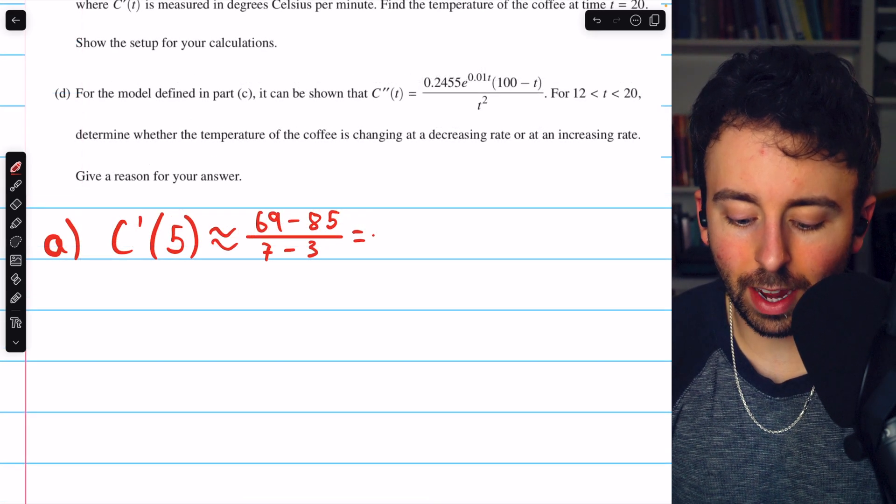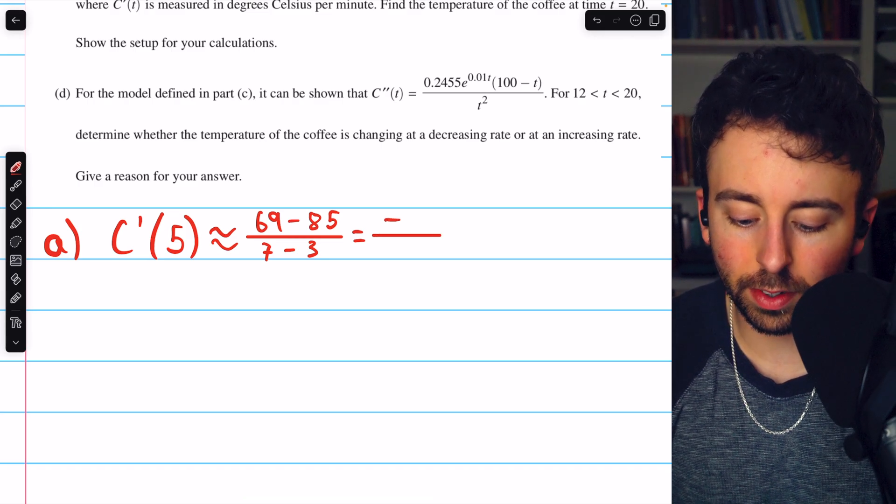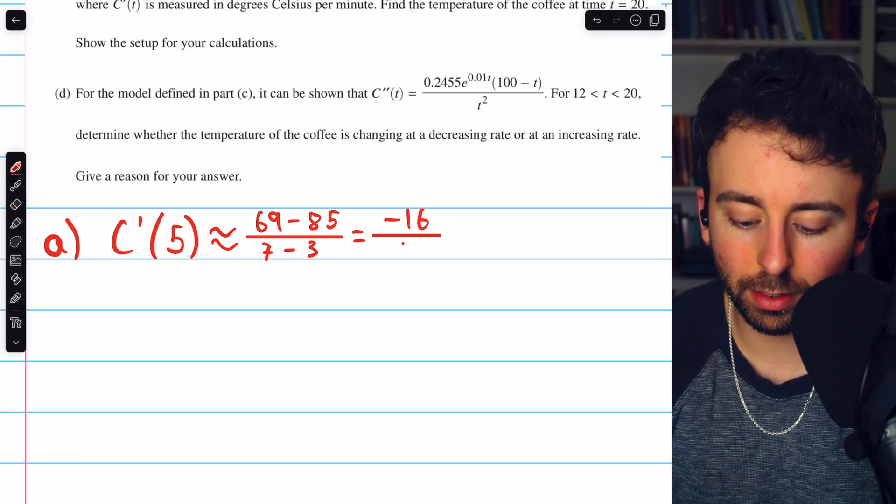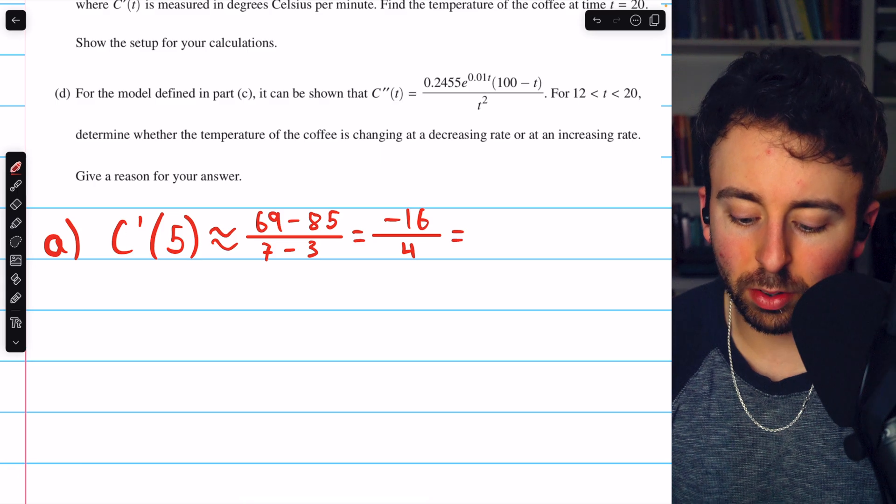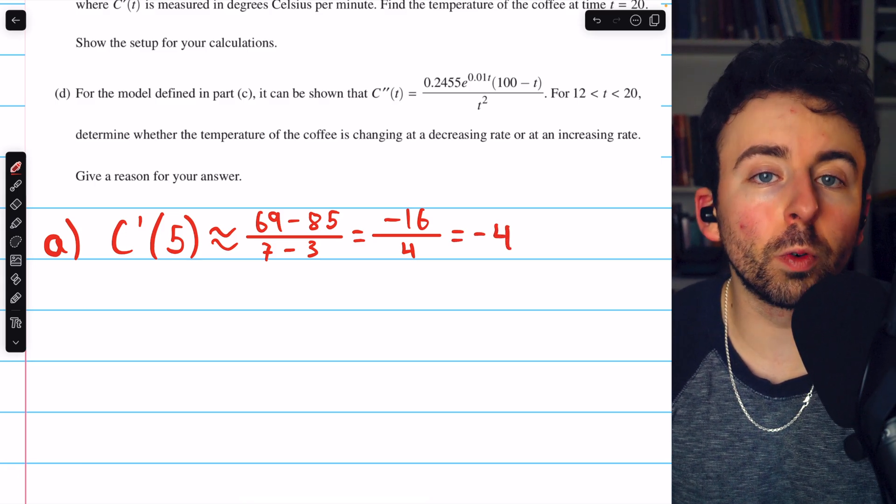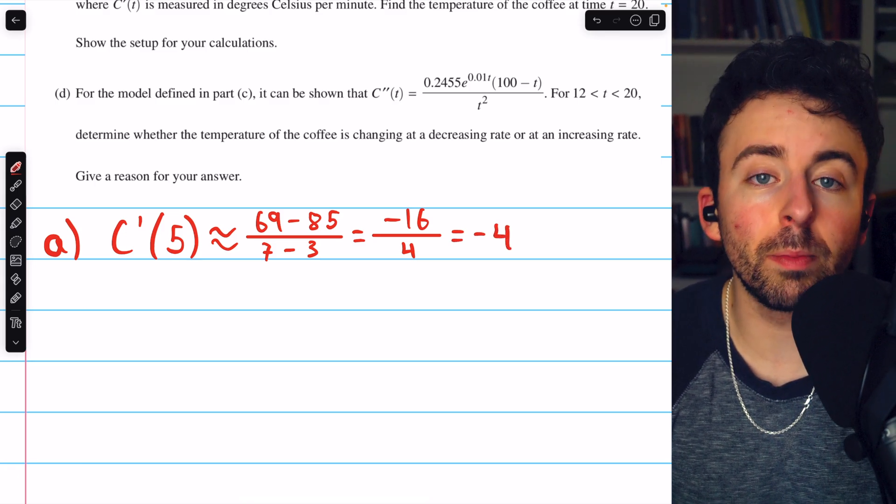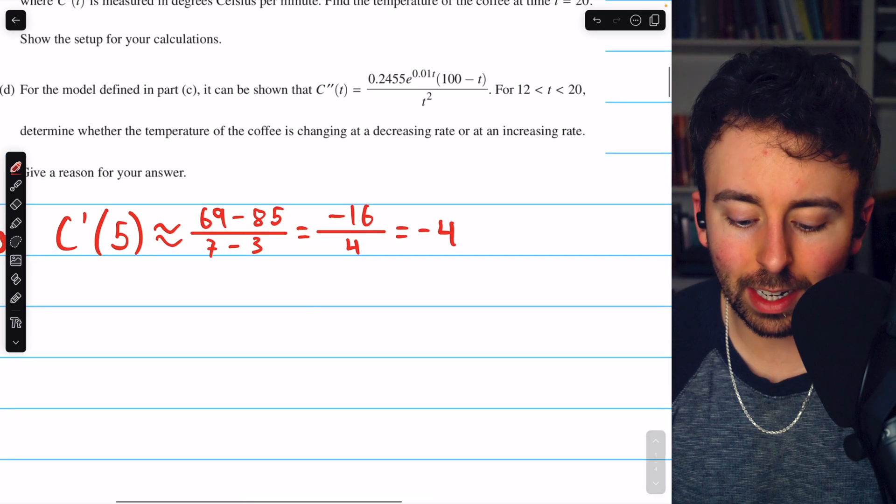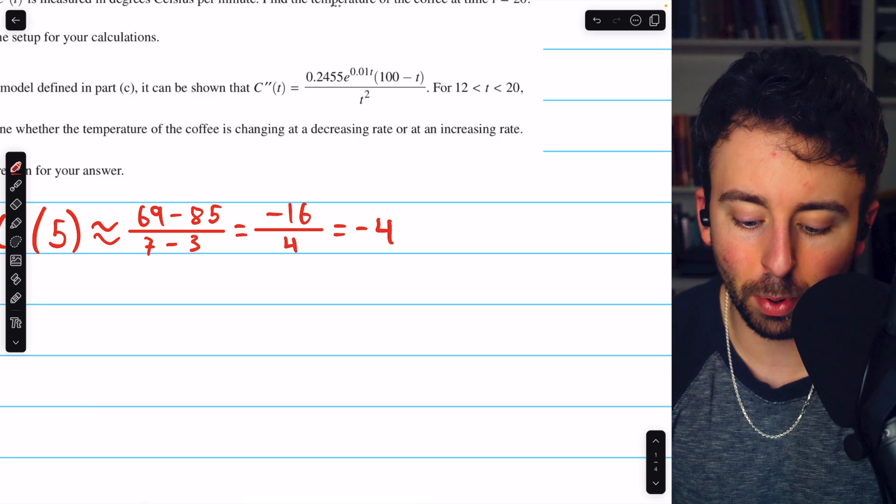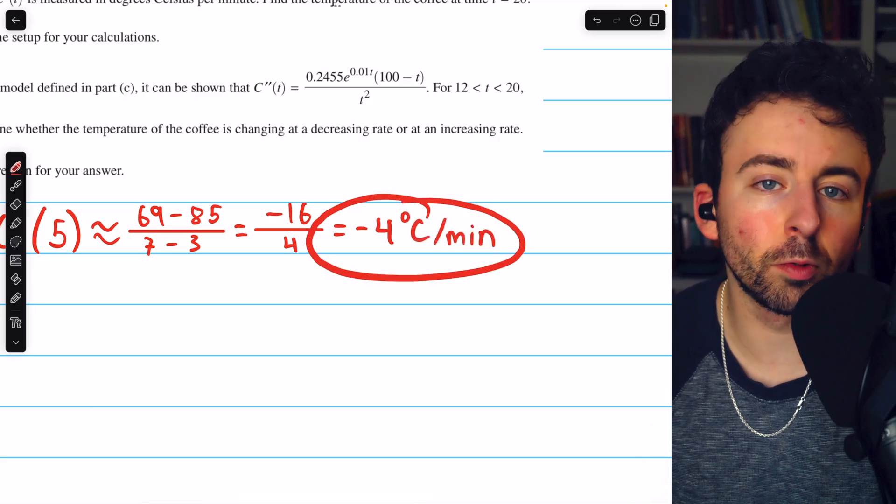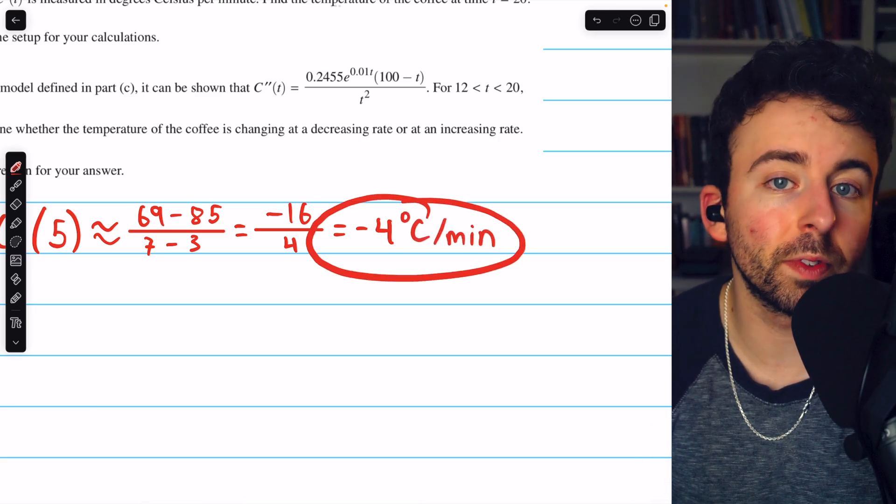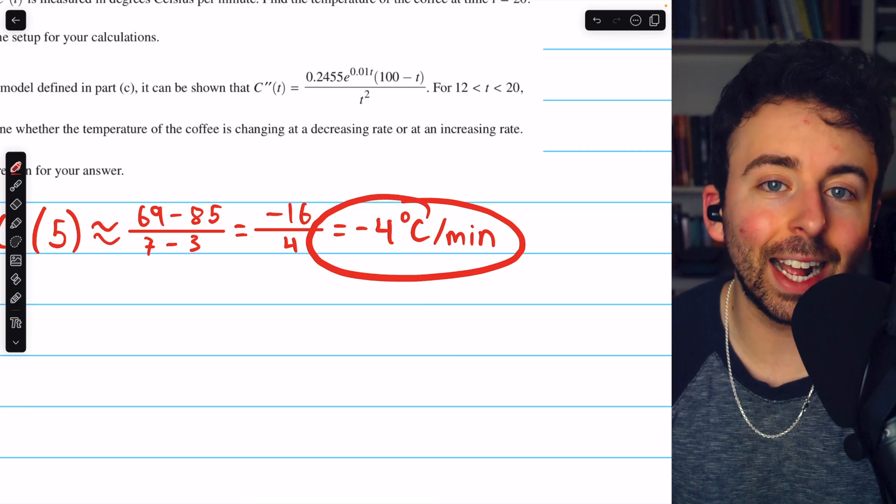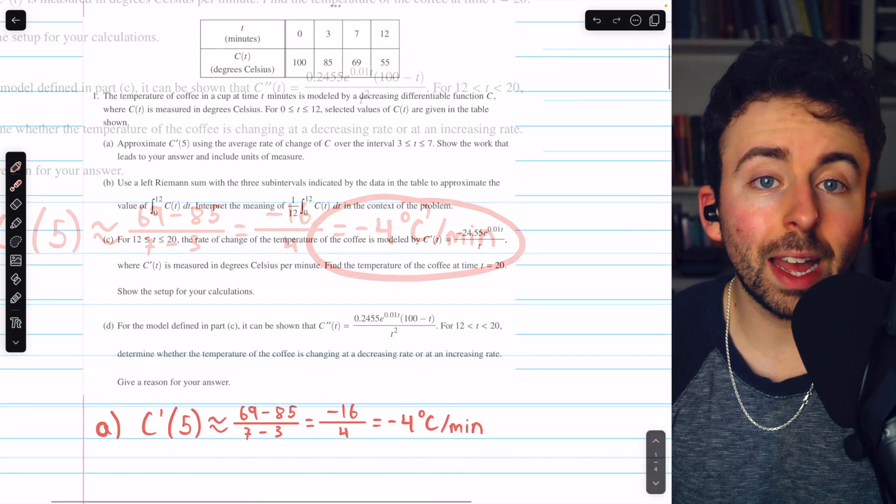69 minus 85 is negative 16. And 7 minus 3 is 4. So this is negative 4. The degrees, the temperature, is being measured in Celsius and the time is in minutes. So this is negative 4 degrees Celsius per minute. That's approximately the rate at which the temperature of the coffee is changing at t equals 5. So that's part A.